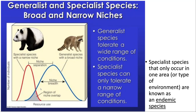The panda can't survive in as varied an environment. Where the two curves overlap would be a location where they may be competing for resources. Specialist species don't need to have only a single location, but things like pandas that do have only one environment where they reside are known as endemic species.